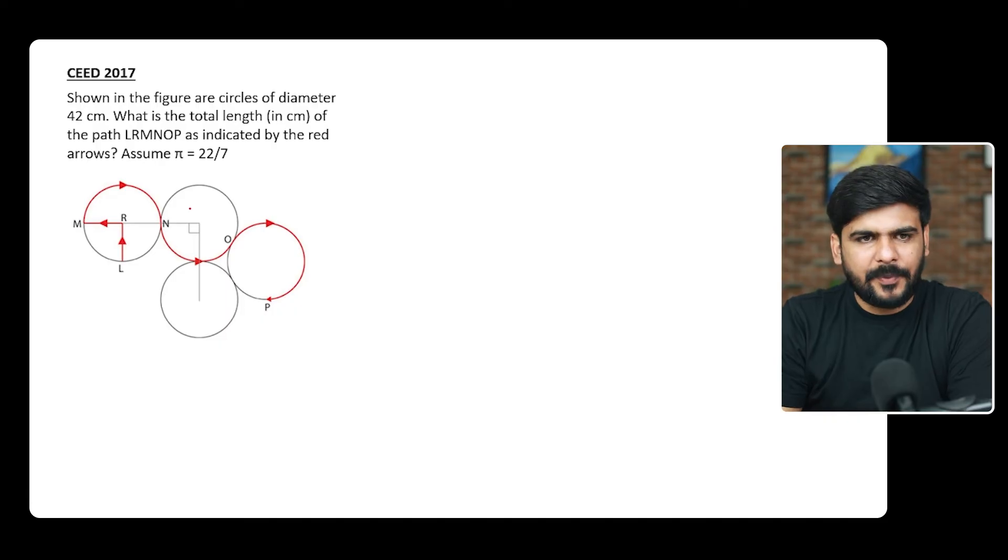We can either calculate it separately, like we can calculate this MN first, then NO separately, then OP separately. For that, we have to find the angle posed by this, because then only we'll be able to trace the line. So this is 90 degrees here, and let's find out this, consider it as theta. Now see, this OA and OB, if I put it like this here, these are radii, so this AB would be equal to twice of radius.